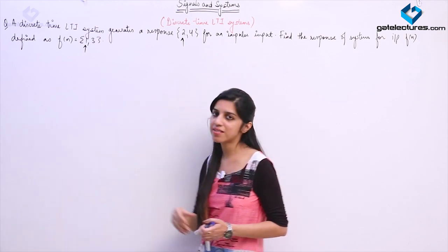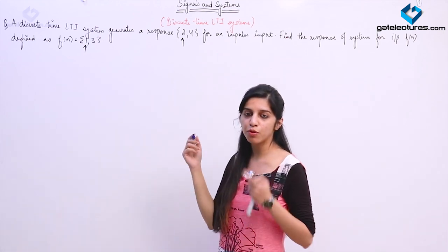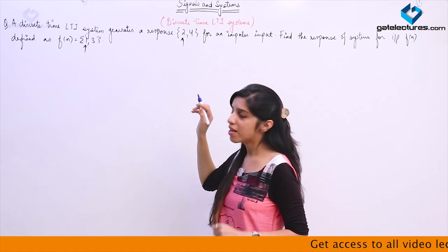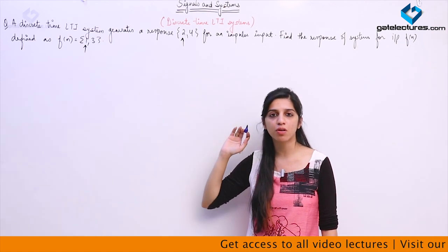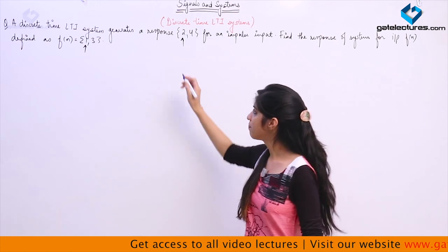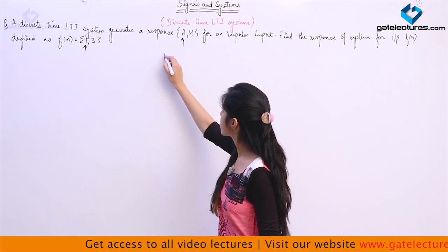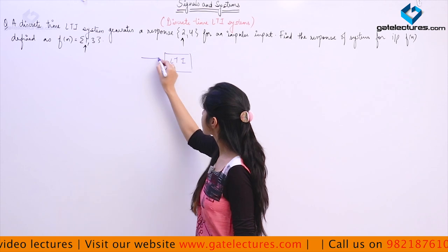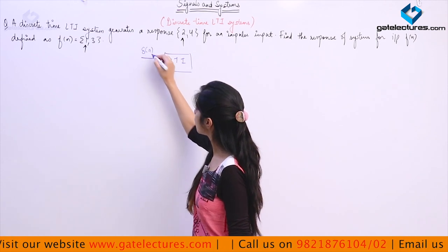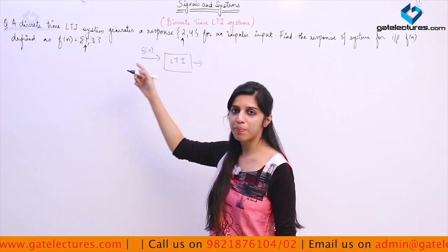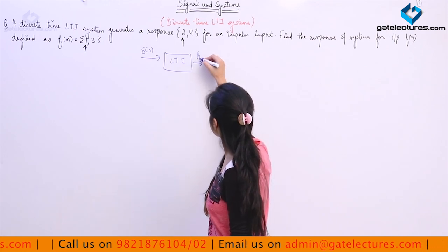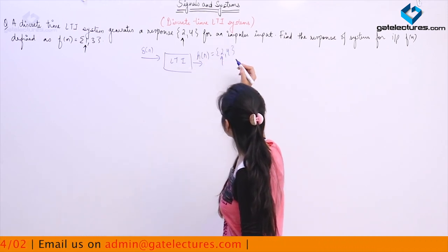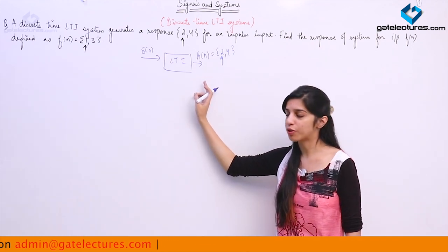Since the system is an LTI system, we can use the properties of linearity and time invariance to calculate the output. Here we are not calculating the output using the convolution integral. Suppose this is my LTI system. When I supplied the input as δ[n], the unit impulse function, then I got output as {2, 4}. This was my obtained output.